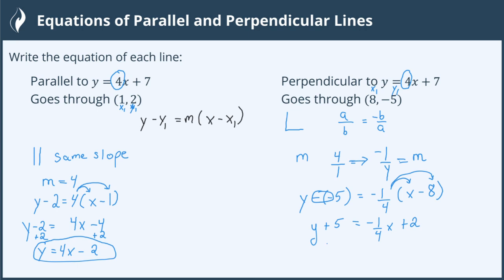Lastly, to get y alone, we'll subtract 5 from both sides. 2 minus 5 is negative 3, making the equation of our perpendicular line negative 1 fourth x minus 3.